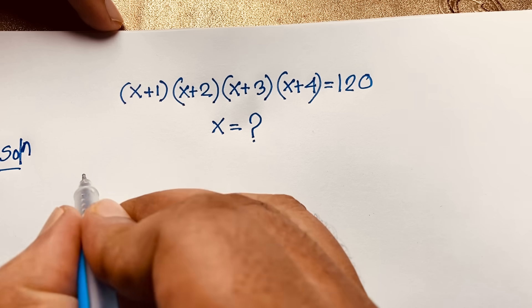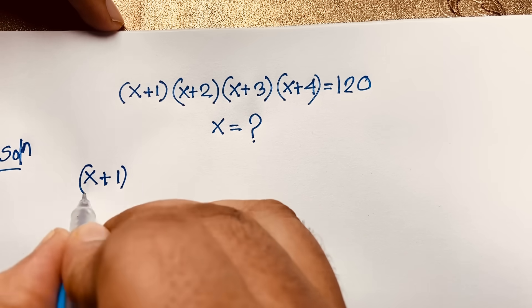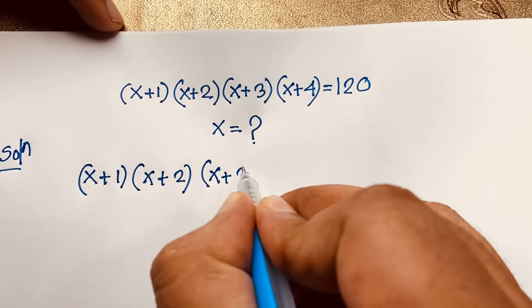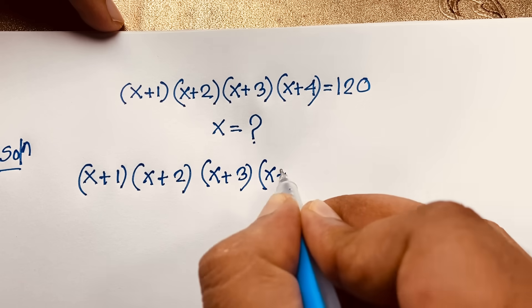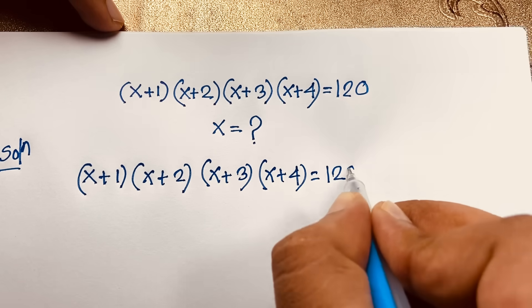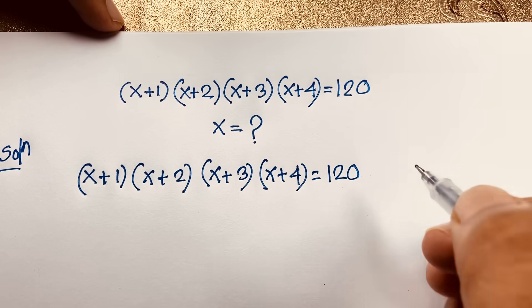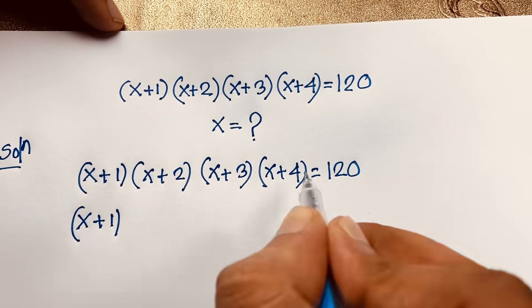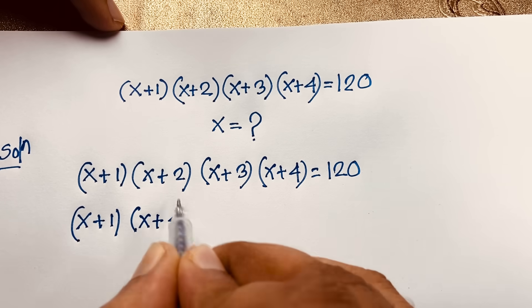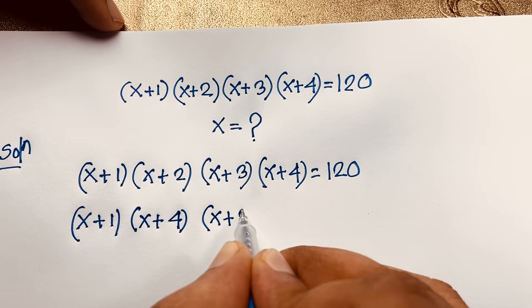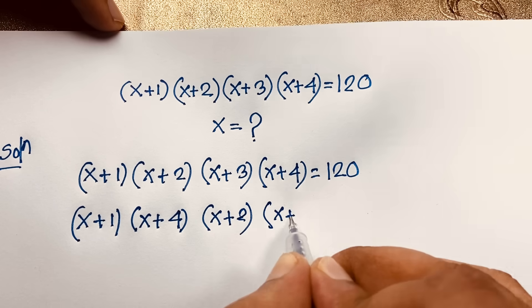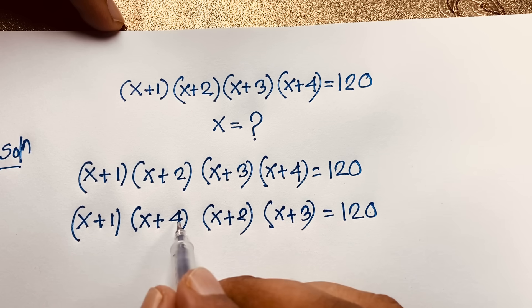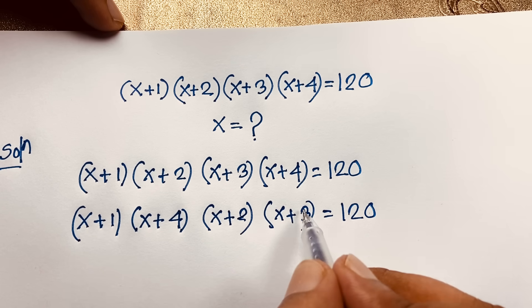Our question is (x+1)(x+2)(x+3)(x+4) = 120. Now I can see we can group this expression as (x+1)(x+4) and (x+2)(x+3). Notice that 1+4 = 5 and 2+3 = 5, so both pairs share the same sum.